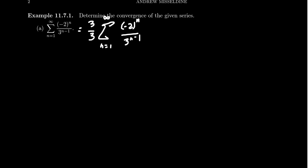The reason I want to do this, I mean times it by 3 over 3 of course is just the number 1, right? But the advantage here is if I combine this 3 with the 3 to the n minus 1 we already have in the denominator, then this series will become 3 times the sum of negative 2 over... Well, I'll back up for a sec.